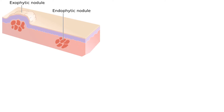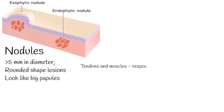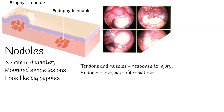Nodules are greater than 5 mm in diameter, more rounded-shaped lesions. Nodules look like big papules. They may form on tendons and muscles in response to injury, and are also common on vocal cords. They occur in conditions including endometriosis, neurofibromatosis, and rheumatoid arthritis.